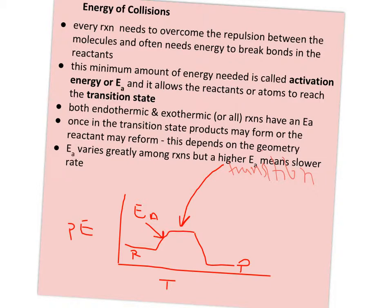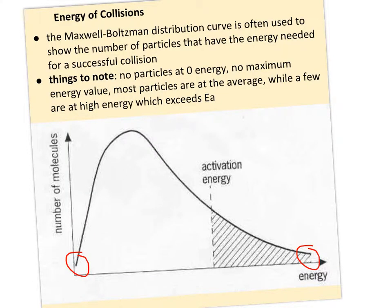Activation energy varies greatly among reactions, but the general principle is a higher activation energy is going to mean a slower rate. So for common reactions with a high energy, scientists or chemists are often looking for catalysts that will speed up that reaction.